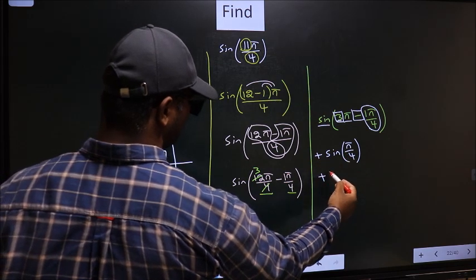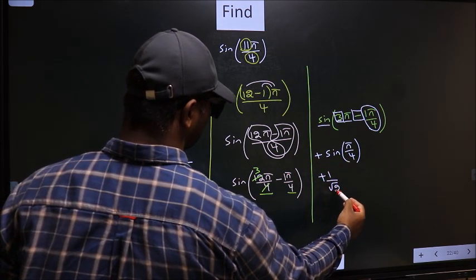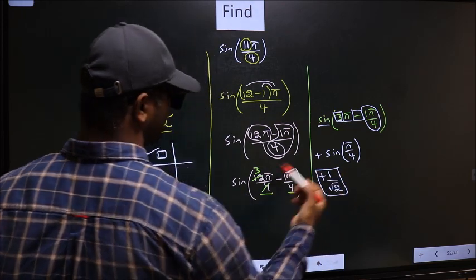So, plus sine π by 4 is 1 by root 2. So, this is our answer.